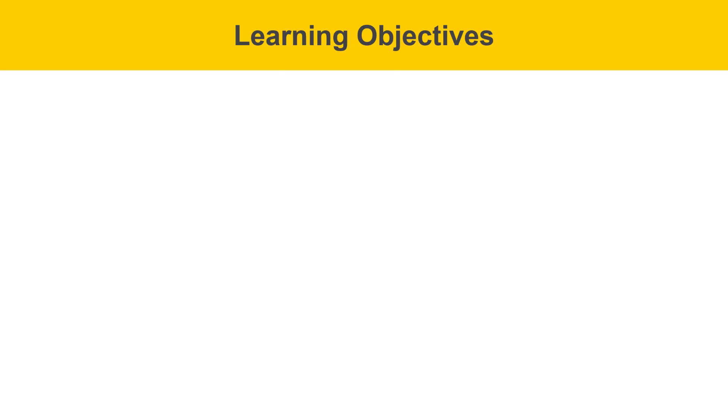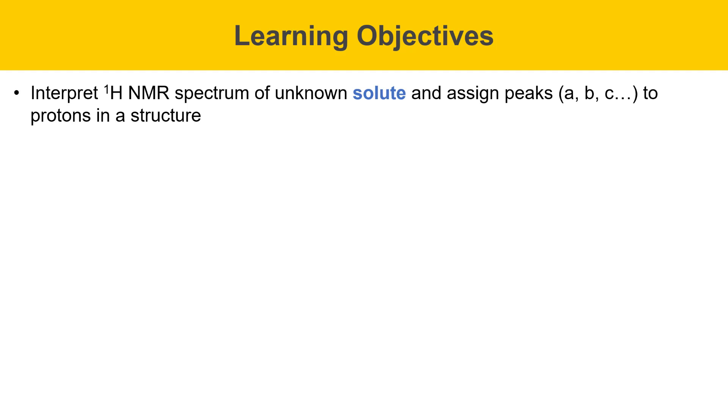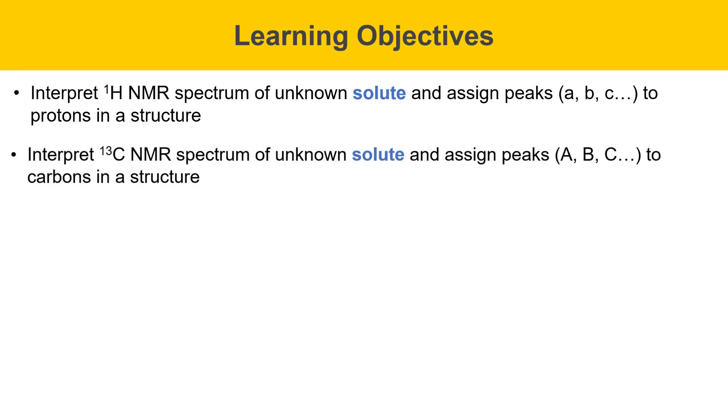Here are some learning objectives for this second period experiment. At the end of this experiment, you will learn to interpret the proton NMR spectrum of your unknown solute and assign the peaks in that spectrum with letters A, B, C, and so on to protons in the structure. You'll be able to interpret the carbon-13 NMR spectrum of your unknown solute and assign its peaks, capital A, capital B, capital C, and so on to carbons in its structure. You'll be able to interpret the mass spectrum of your unknown solute and assign the molecular ion peak and the base peak to structures.